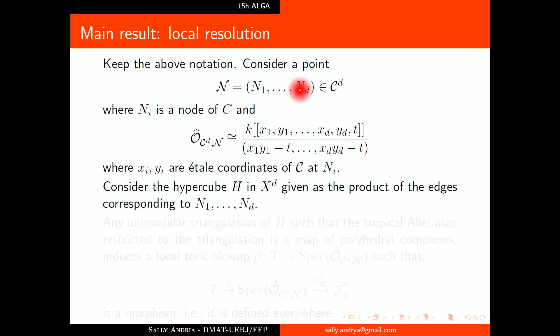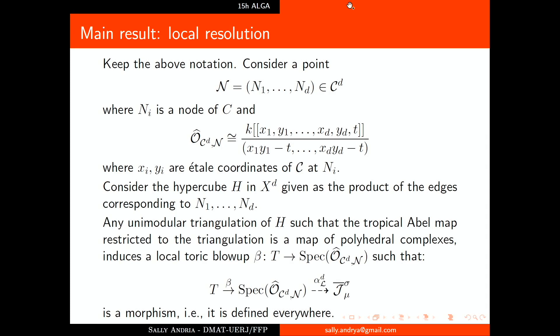Then the result says that any unimodular triangulation of H such that the tropical map restricted to the triangulation is a map of polyhedral complexes induces a local toric blow-up such that the map is a morphism. So we can solve the geometrical problem.